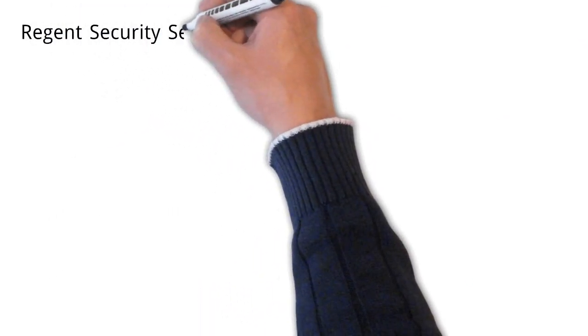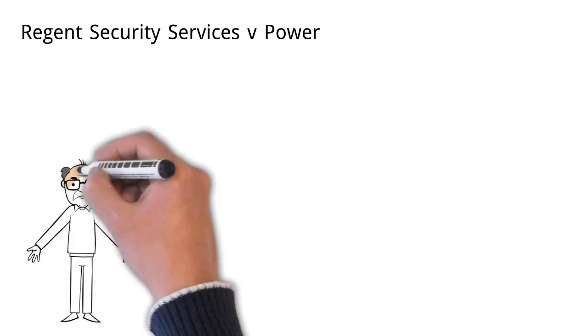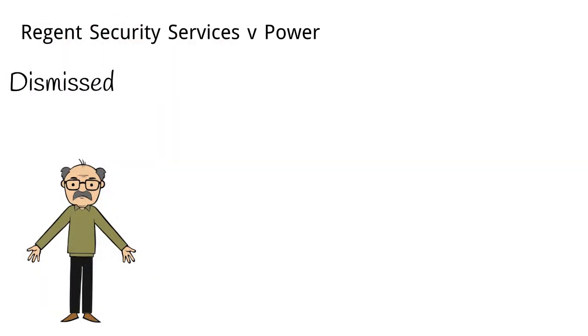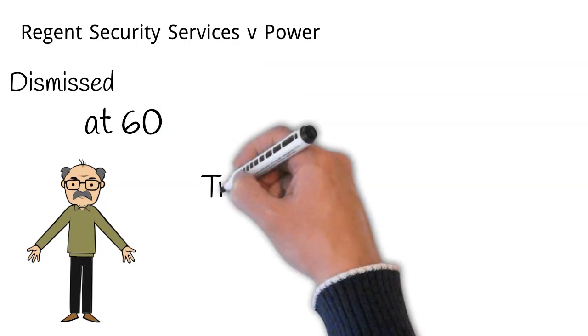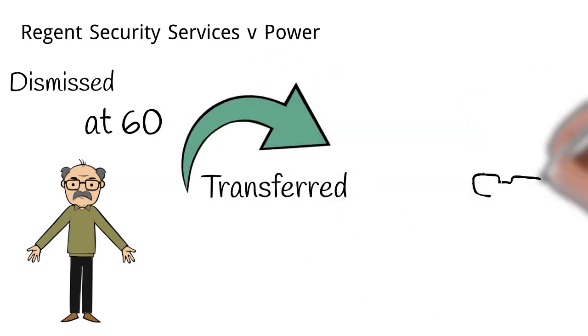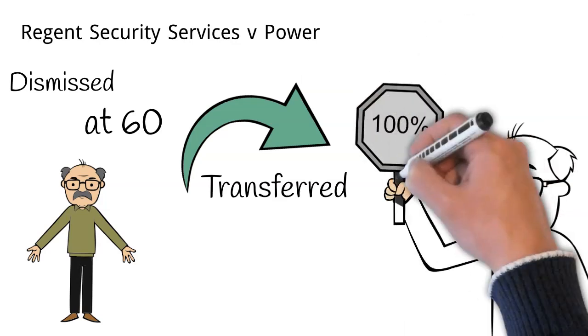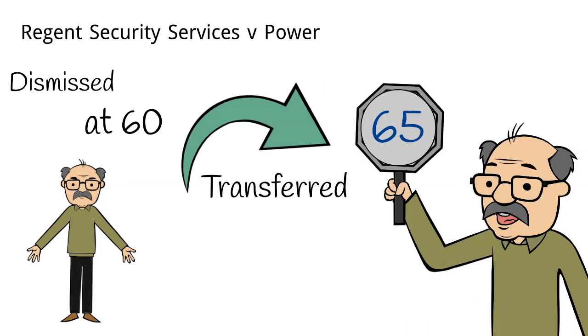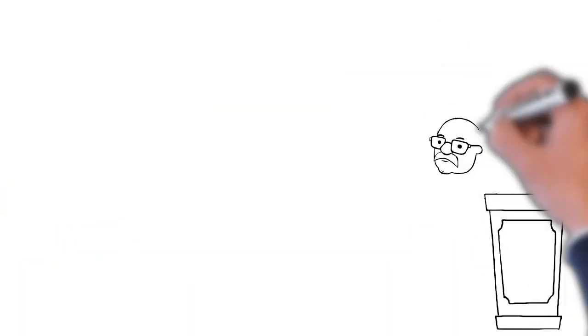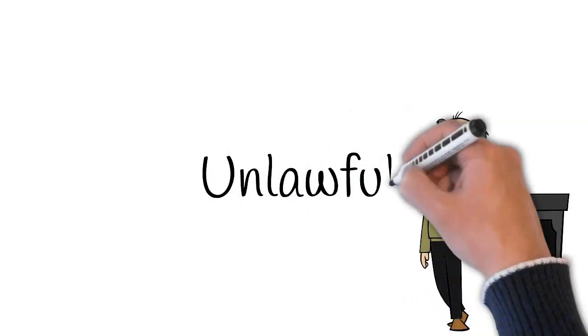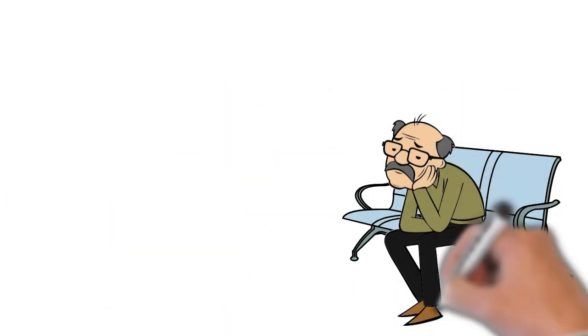In Regent Security Services v Power, a case in which I appeared, an employee was dismissed when he reached the age of 60, even though when he was transferred across to his new employer, he agreed to a contract increasing his retirement age to 65. This happened, by the way, before age discrimination was unlawful and at a time when an employee could be fairly dismissed on reaching retirement age.